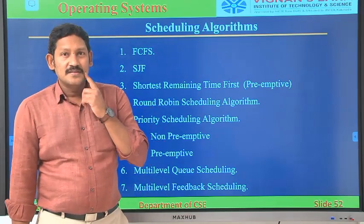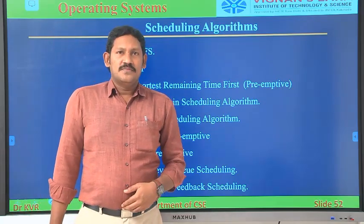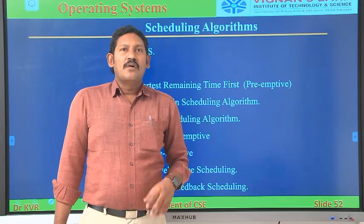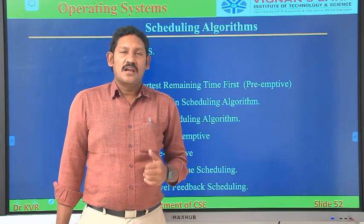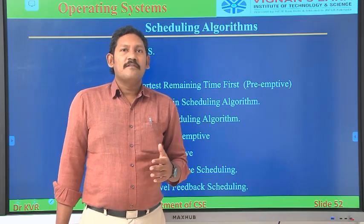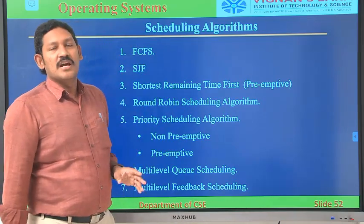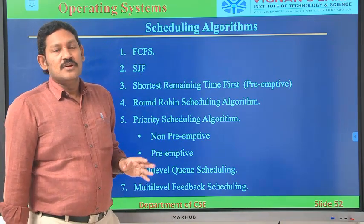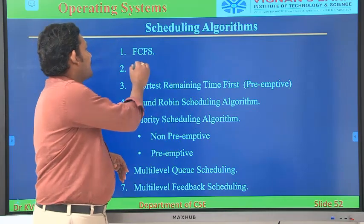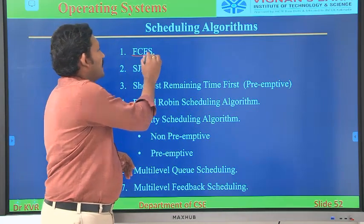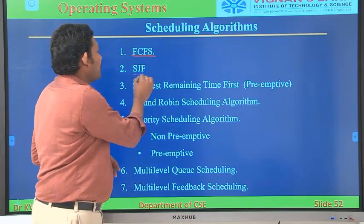Our next topic is scheduling algorithms. In total we have different scheduling algorithms. The first one is FCFS — First Come, First Serve. Next we have SJF — Shortest Job First.